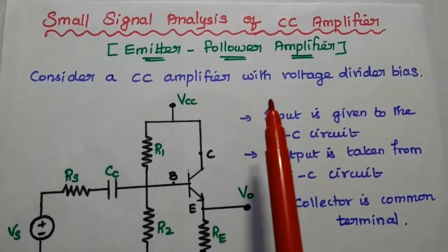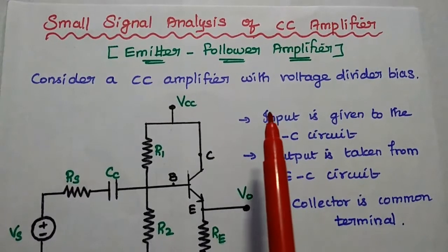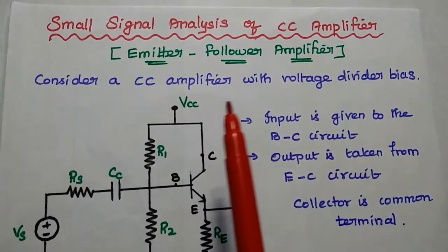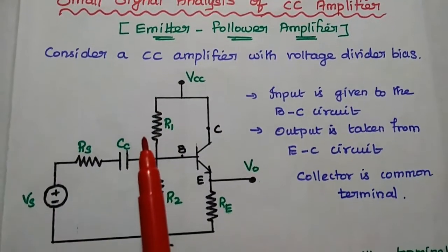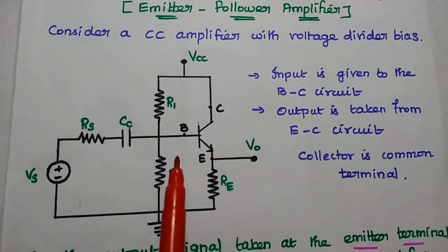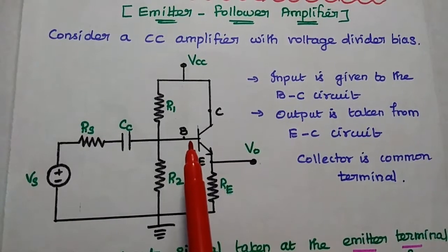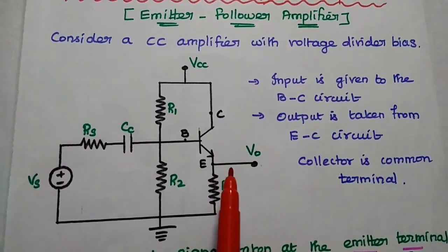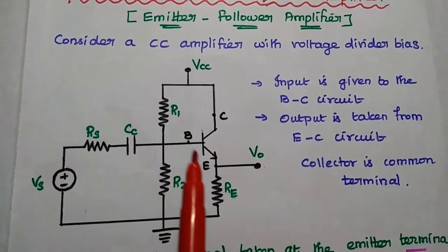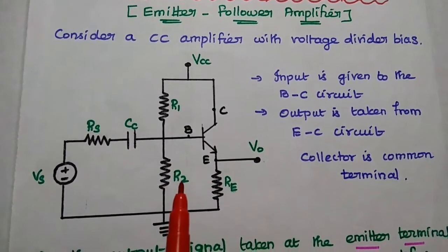We are going to discuss common collector amplifier and its small signal analysis in detail. Common collector amplifier is also called as emitter follower amplifier. Consider a CC amplifier with voltage divider bias circuit. Input is given to the base terminal, output is taken from the emitter terminal. Collector is common to both input and output terminals. Hence, it is called as common collector amplifier.